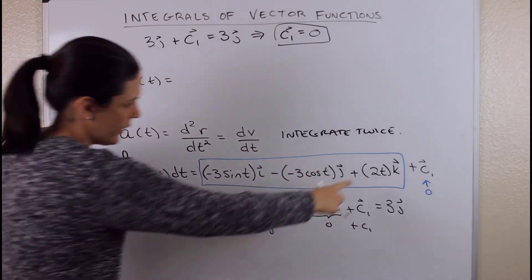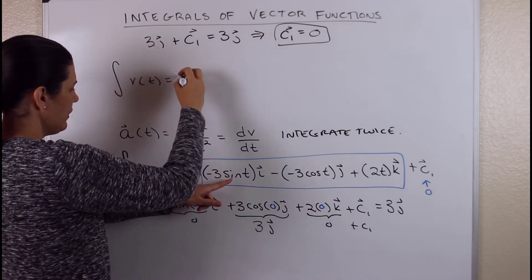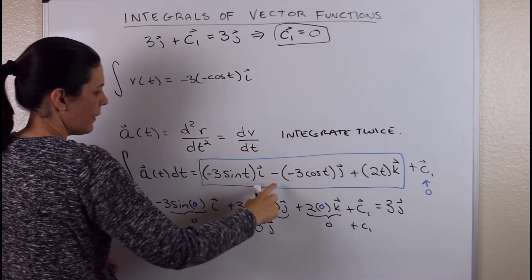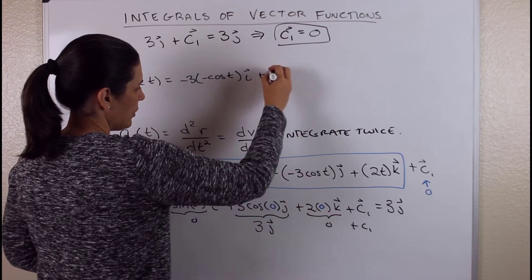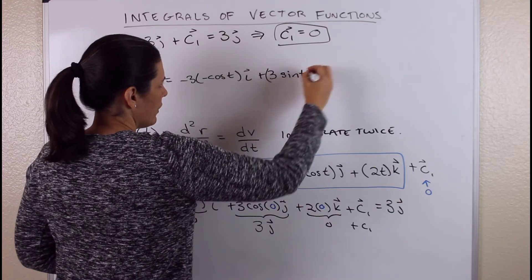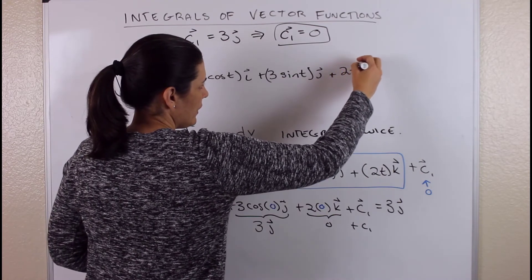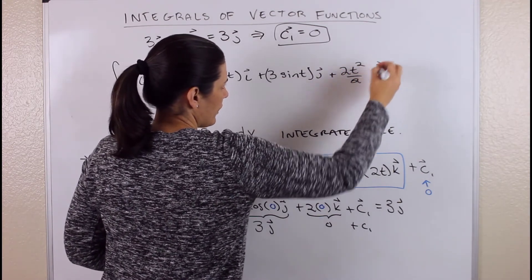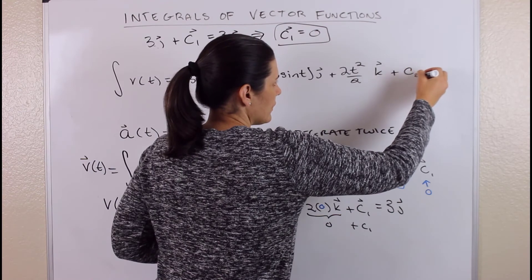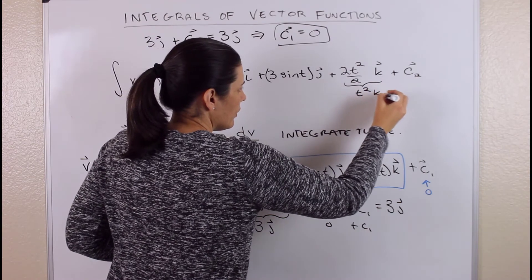Continuing the integration: the antiderivative of cosine T is sine T, giving plus 3 sine T in the J direction. The antiderivative of 2T is 2T squared over 2, which simplifies to T squared in the K direction. Since this is still an indefinite integral, we add a constant vector C2. So our position function so far is 3 cosine T i plus 3 sine T j plus T squared k plus C2.